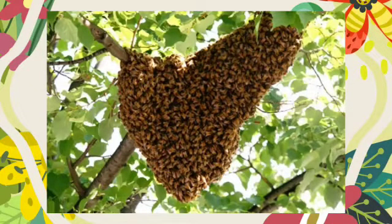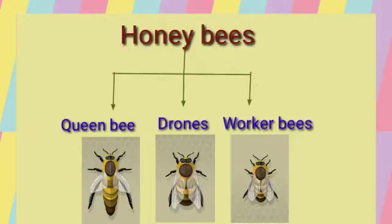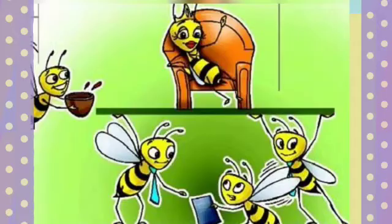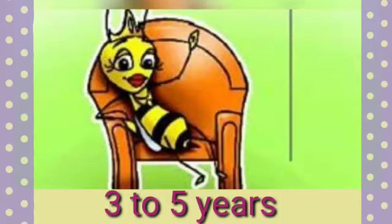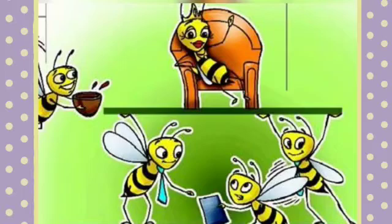In the hive of honeybees, three kinds of bees are found: a queen bee, some male drones, and worker honeybees. The queen bee and the drones are only for reproduction. The lifespan of the queen bee is approximately 3 to 5 years, whereas all work is done by worker bees. The work allotted to the worker bees keeps on changing according to their age.